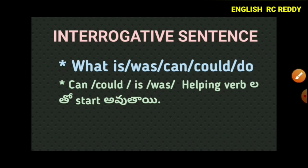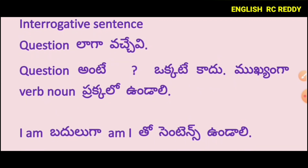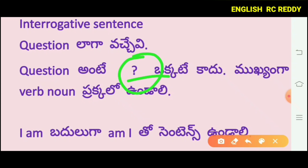Let's go in detail. This is an interrogative sentence — very easy. Interrogative sentence means interrogation, that is, a question. A question mark will come at the end. For example: 'Am I going?' or 'Am I going there?' If the assertive is 'I can do this job,' the interrogative becomes 'Can I do this job?' The key rule is that the verb comes first in an interrogative sentence.